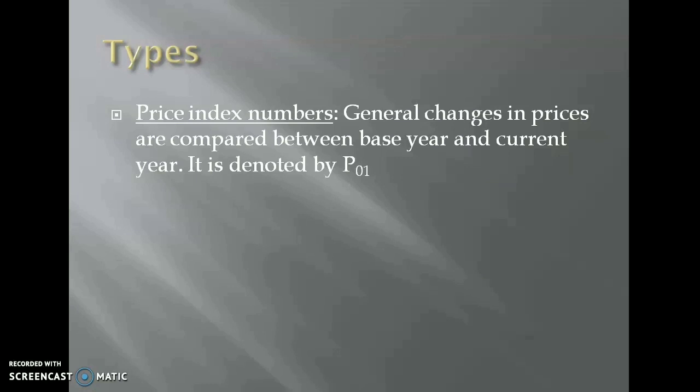Our next topic is types of index numbers. The first one is price index numbers. Changes in the prices are compared between base year and current year, and this is denoted by P01. Price indexes are further subdivided into wholesale price index numbers and retail price index numbers. Wholesale price index numbers compare the wholesale prices in different places. When it comes to retail price index number, they are comparing between the retail prices of different places.